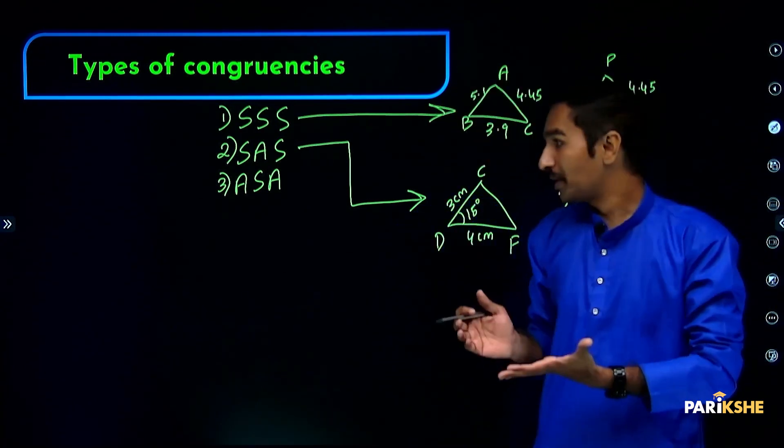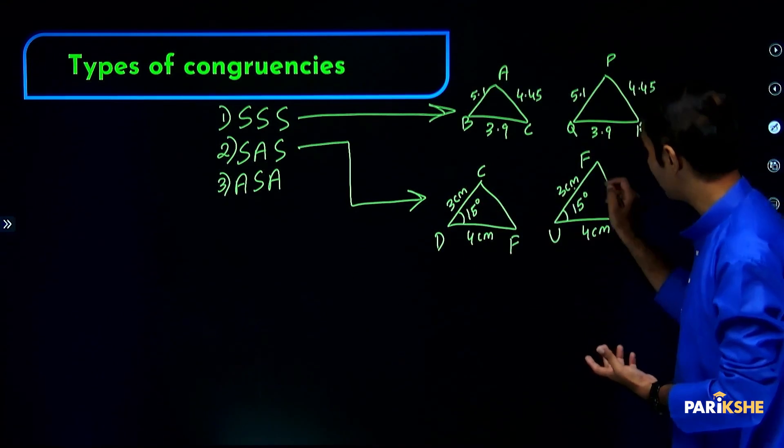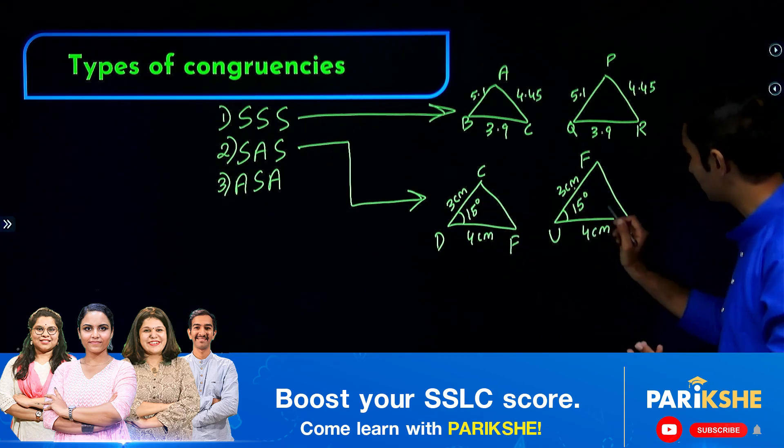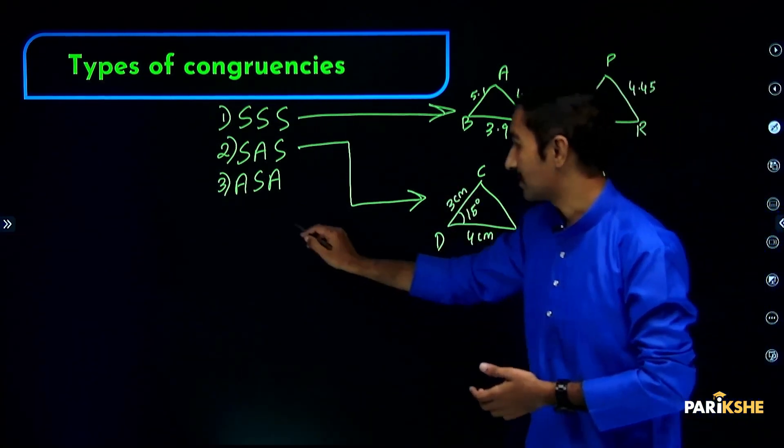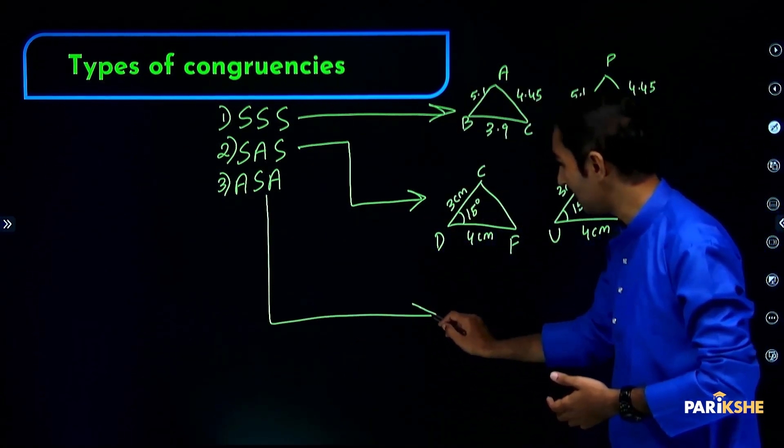Triangle CDF is congruent to FUT. Congruent means same shape, same size - 3 centimeters, 4 centimeters, 3, 4, 15 and 15. This is SAS.